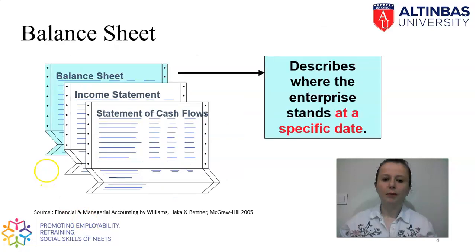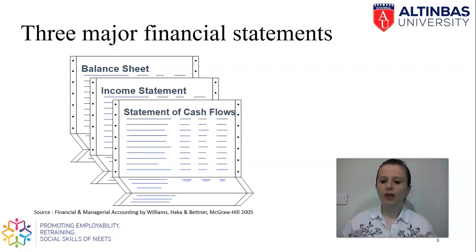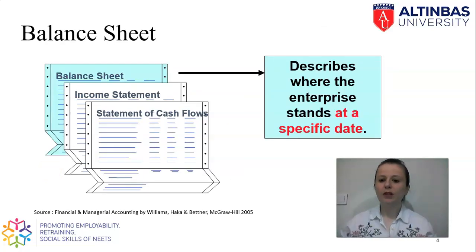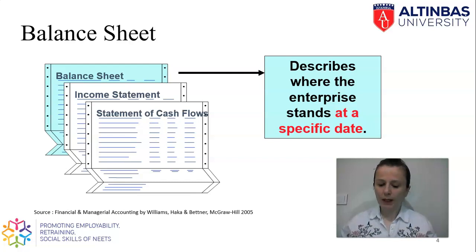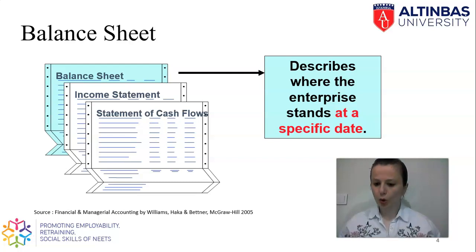There are three major financial statements that we are using: the balance sheet, income statement, and statement of cash flows. In this part we are going to discuss about the balance sheet. The balance sheet describes where the enterprise stands at a specific day. The balance sheet is not a financial statement that covers a period of time; instead it is showing us assets and liabilities at a certain date.